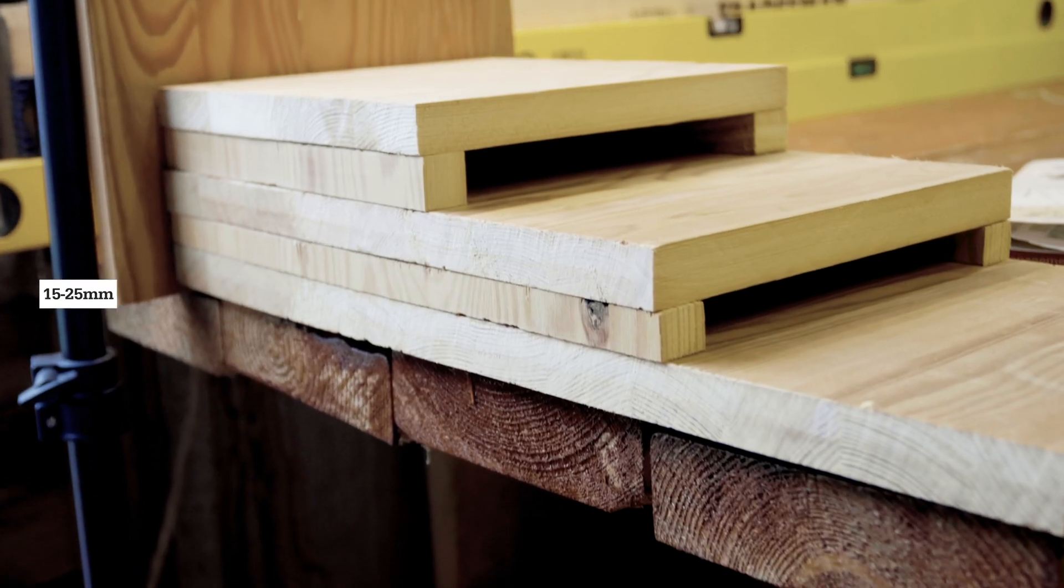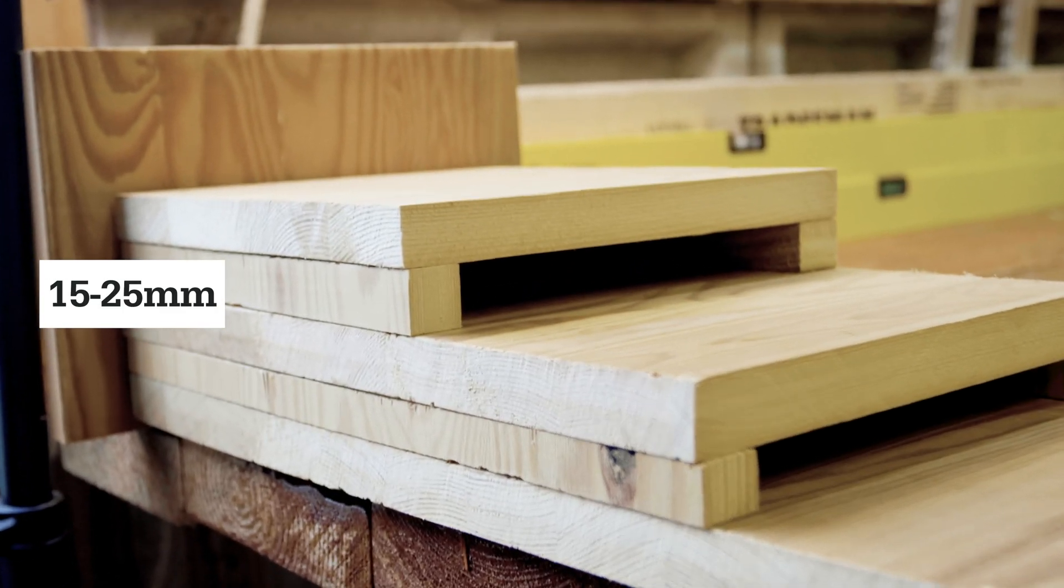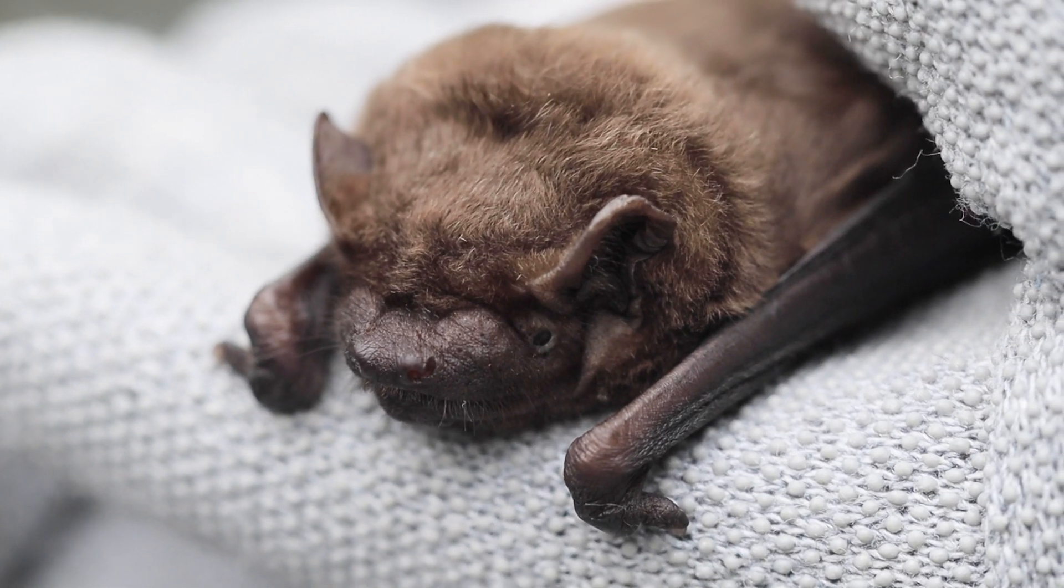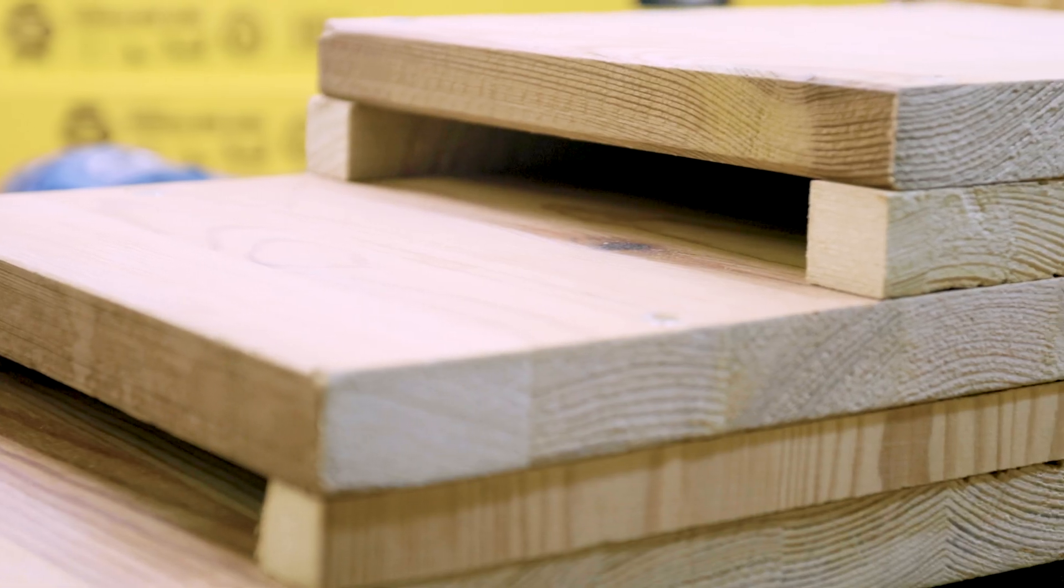The most important thing to remember is the opening needs to be around about 15 to 25 millimetres. That's the right size for bats in the British Isles and Northern Europe.